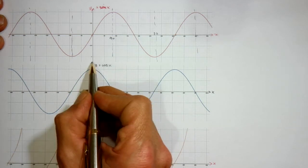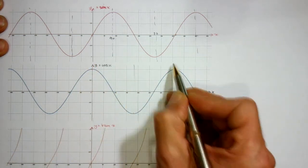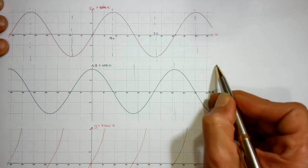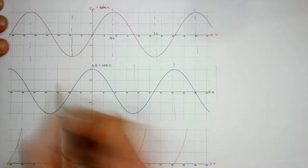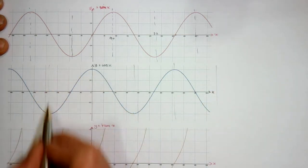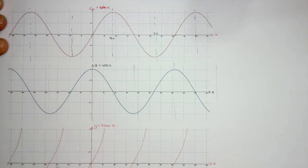The cos graph, lines of symmetry at 0, 180, 360, 540, 720, and so on. And also negative 90, negative 180, and the tan graph has no line of symmetry whatsoever.